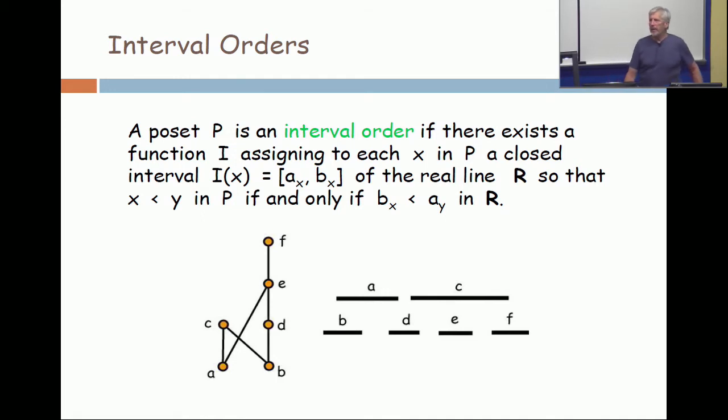When we have a family of intervals of the line, you can consider them as a graph by saying that two intervals correspond to adjacent vertices when they overlap.